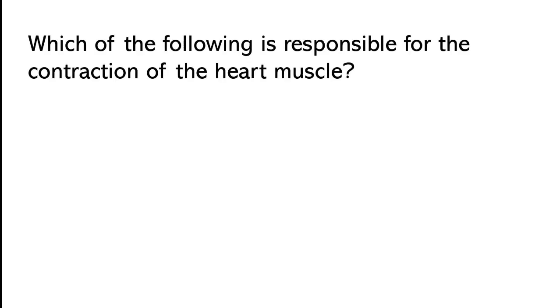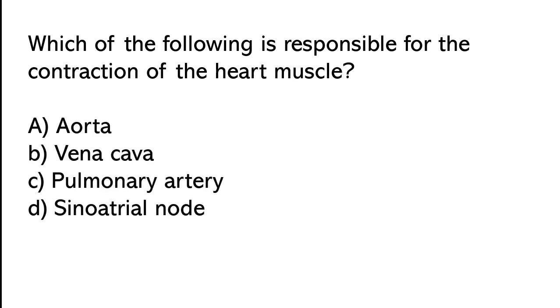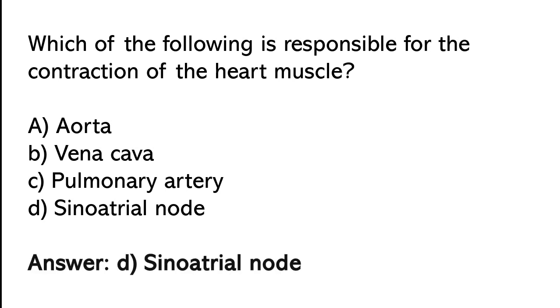Which of the following is responsible for the contraction of the heart muscle? Aorta, Vena Cava, Pulmonary artery, Sino-atrial node. So the correct answer is option D: sino-atrial node.